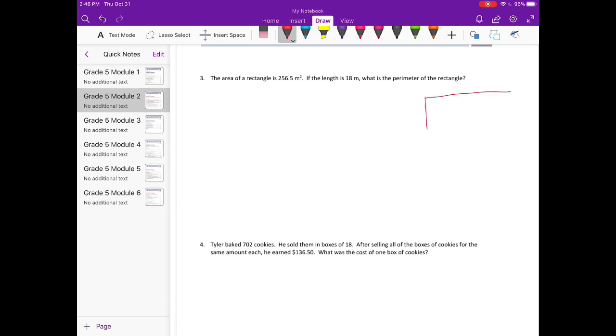So we have a rectangle. Remember, perimeter is the distance around the outside. So perimeter is equal to the length plus the length plus the width plus the width. And area is equal to length times width. So be careful, we're talking perimeter, but they've given us the area. So what we can do, we have the length. The length is 18. We don't know what the width is, but we know that the area is 256 and 5 tenths. So we can divide to find the width and then we'll apply it to the perimeter. So 256 and 5 tenths divided by 18.